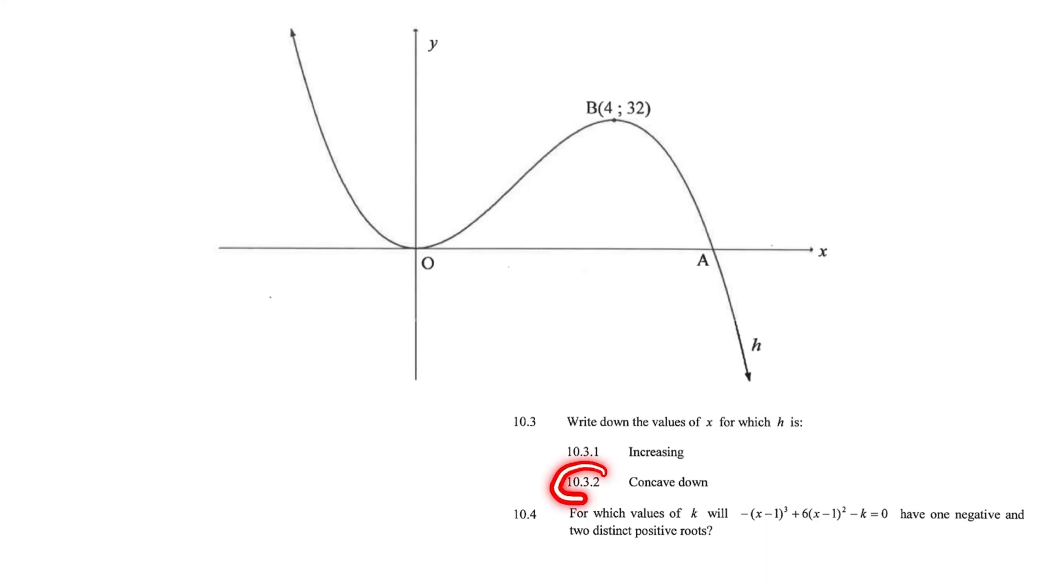10.3.2. For which values of x is the graph concave down? So concavity of a graph changes at the point of inflection. And the x value for the point of inflection is where x equals 2. It's exactly the middle between the two turning points.